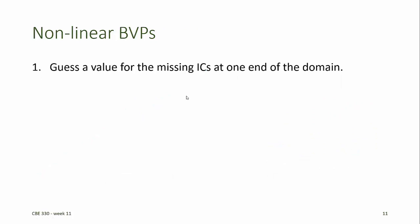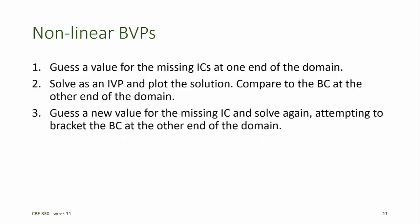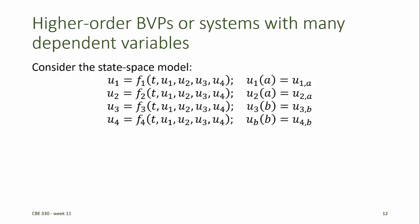Now, if our boundary value problem is non-linear, then when we guess a value for the missing initial condition at the left-hand end of the domain, we cannot linearly interpolate to find the exact value. But we can still follow the same method: guess a value, solve as an IVP, plot the solution, and compare to the boundary condition at the other end. Then we guess a new value, attempting to bracket the boundary condition at the other end, and iterate using the bisection method or some other root-finding method to match the solution at the right-hand end.